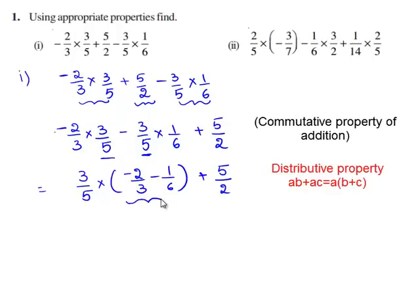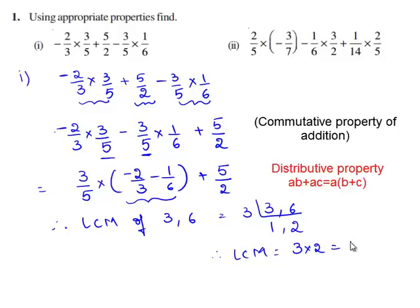Here, in order to add two rational numbers, we need to have a common denominator. That is, we need to find the least common multiple of 3 and 6. Therefore, the LCM of 3 and 6 is 6.